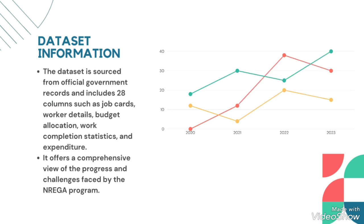The dataset from official records includes 28 columns on job cards, work details, budget and work statistics. It offers a comprehensive view of NREGA's progress and challenges.